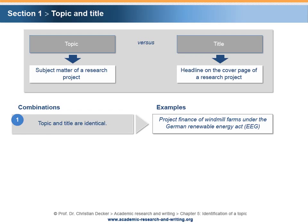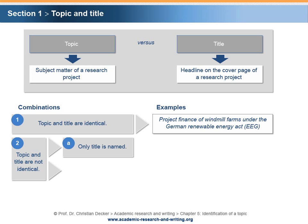However, there are two combinations in which topic and title are not identical. First, only the title is named without explicitly stating the topic. An example of a title could be 'EEG — Blown in the Wind.' Here, the recipient is not informed about the underlying topic. Please note that titles for published research output might sometimes be formulated in a provoking or entertaining way, as the authors want to stick out of the bulk of publications. Anyhow, this is not common or even advisable for student research projects.